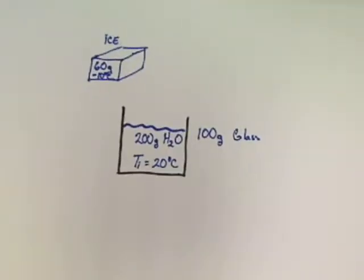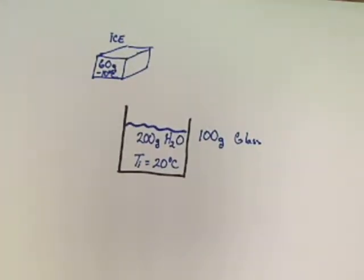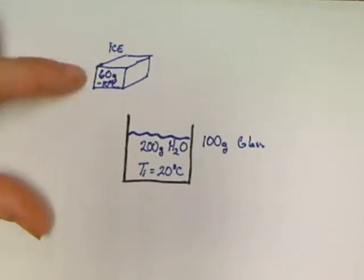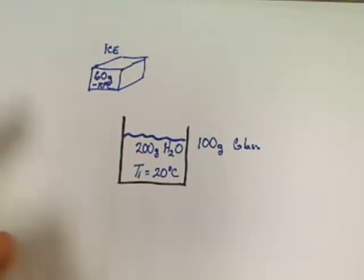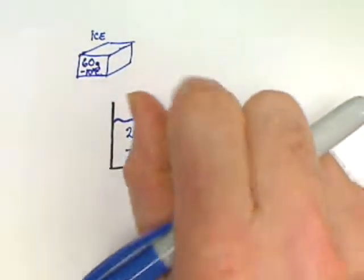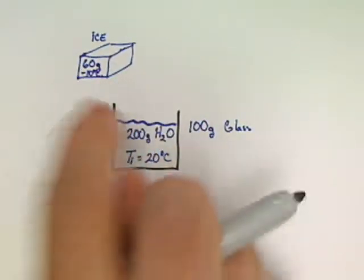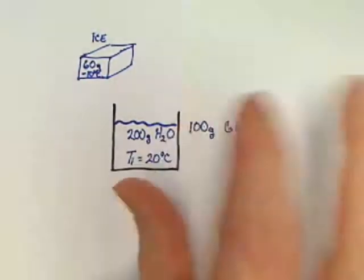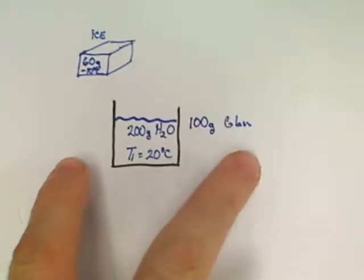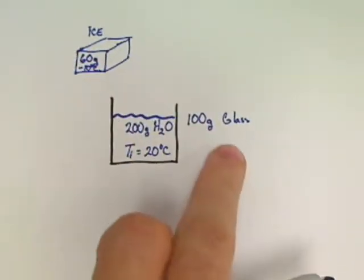Let's do one more — same numbers as last time except with a bigger ice cube. If we work this one out, temperature final comes out mauled — negative. So I'll save you the time. The answer doesn't work. So how do you set up the sum of the Q's for a question where all the ice doesn't melt?